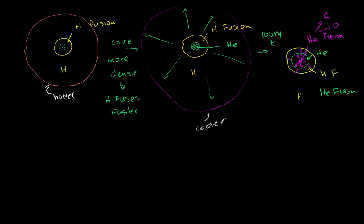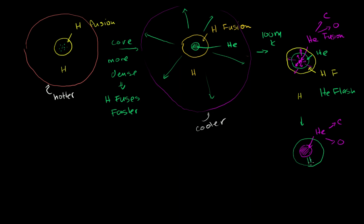Once that happens, the star is going to be more stable — and I use that in quotes because red giants are already less stable than a main sequence star. But once the helium flash occurs, you'll have a slightly larger volume, so it's no longer contained in as tight a space. Now you have helium fusing into carbon and oxygen, and there are all sorts of other element combinations — many elements in between helium and carbon and oxygen — but these are the ones that dominate. Outside of that you have helium that is not fusing, and outside of that you have fusing hydrogen, and then the hydrogen plasma of the rest of the star.